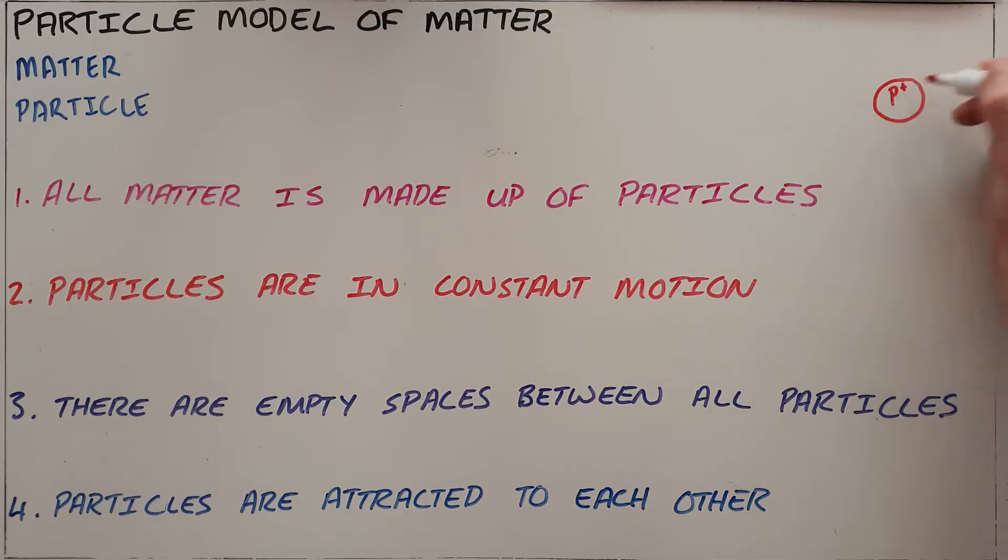The first one is that a particle can be an atom. We remember that atoms are made up of a nucleus that contains protons and neutrons, and then energy levels that surround the nucleus that contain the electrons. That is the first type of particle.